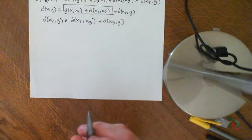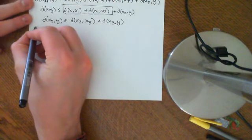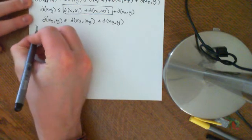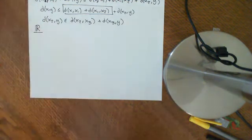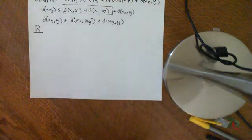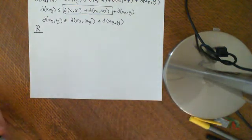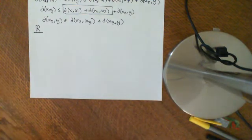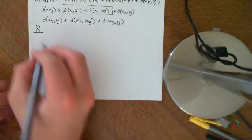We're going to begin our examples of metric spaces. The first one we're going to consider is the real line — the real numbers. This was actually our motivation for defining the structure of a metric space, so now we better check that it actually is a metric space.